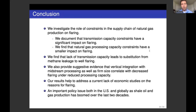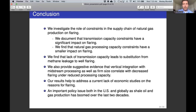In conclusion, we investigate the role of constraints in the supply chain of natural gas production on flaring. We document that transmission capacity constraints have a significant impact on flaring, and that natural gas processing capacity constraints have a smaller impact. We find that lack of transmission capacity leads to substitution from methane leakage to well flaring. We also provide suggestive evidence that vertical integration with midstream processing and firm size correlate with decreased flaring under reduced processing capacity. These results address a current lack of economic studies on the reasons for flaring, an important policy issue both in the U.S. and globally as shale oil and gas production has boomed over the past two decades.